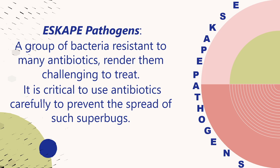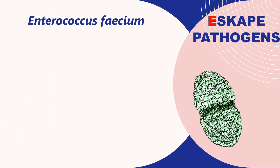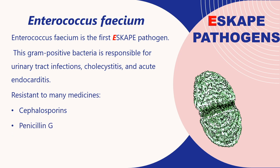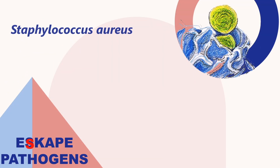The first letter in ESCAPE pathogens refers to Enterococcus faecium. This is a gram-positive bacteria which is responsible mainly for urinary tract infections. It is resistant to many medicines, including penicillin.